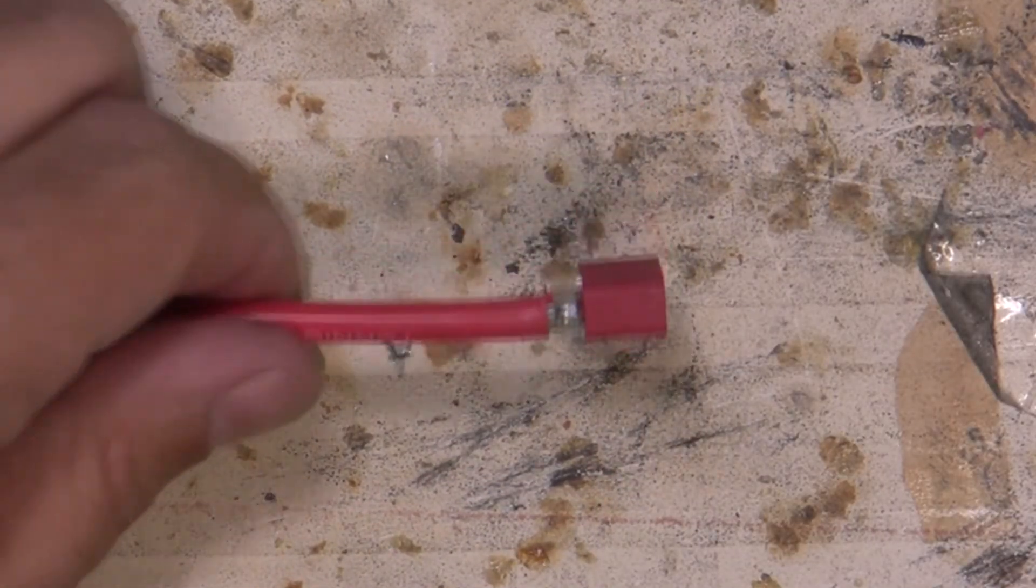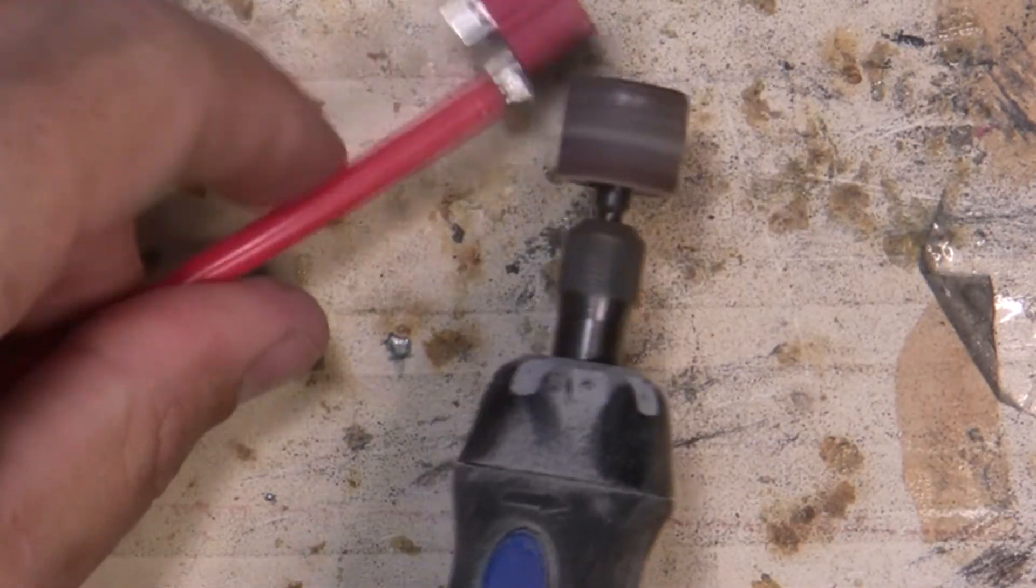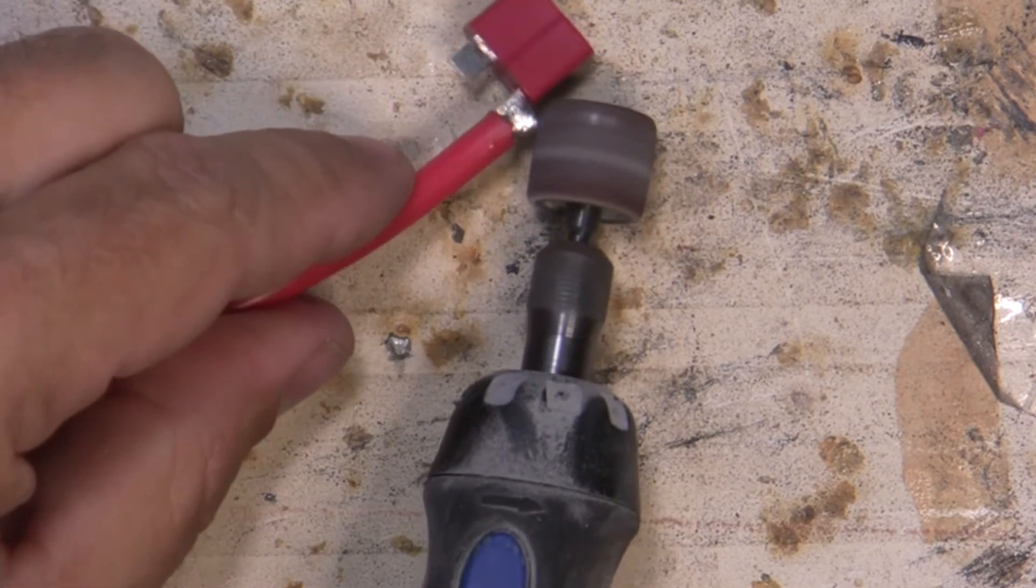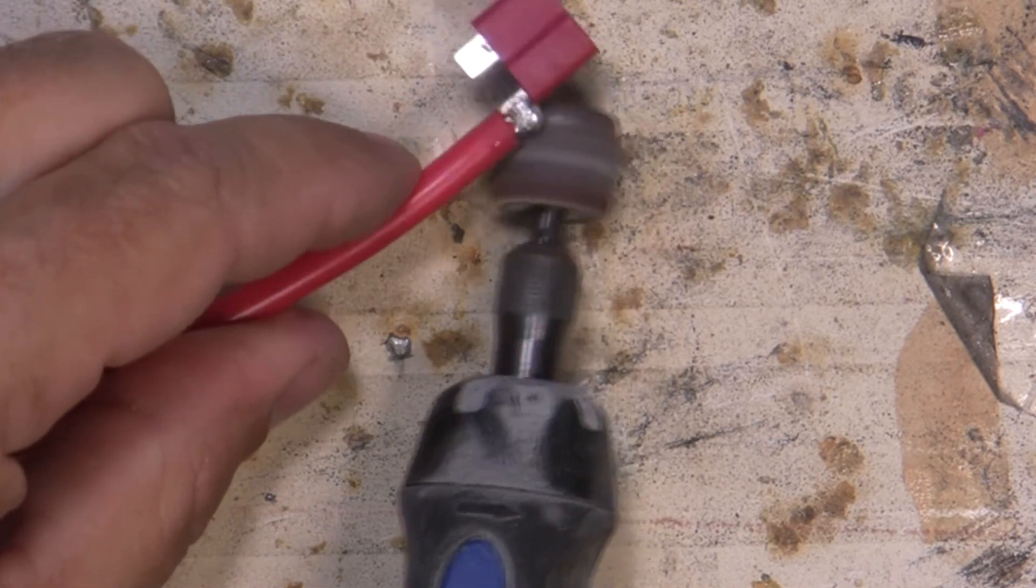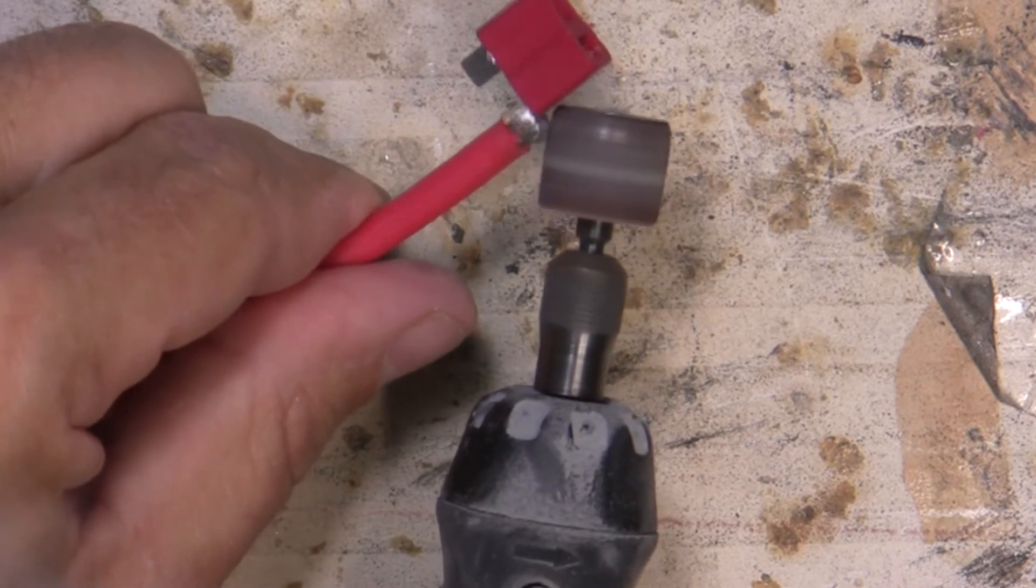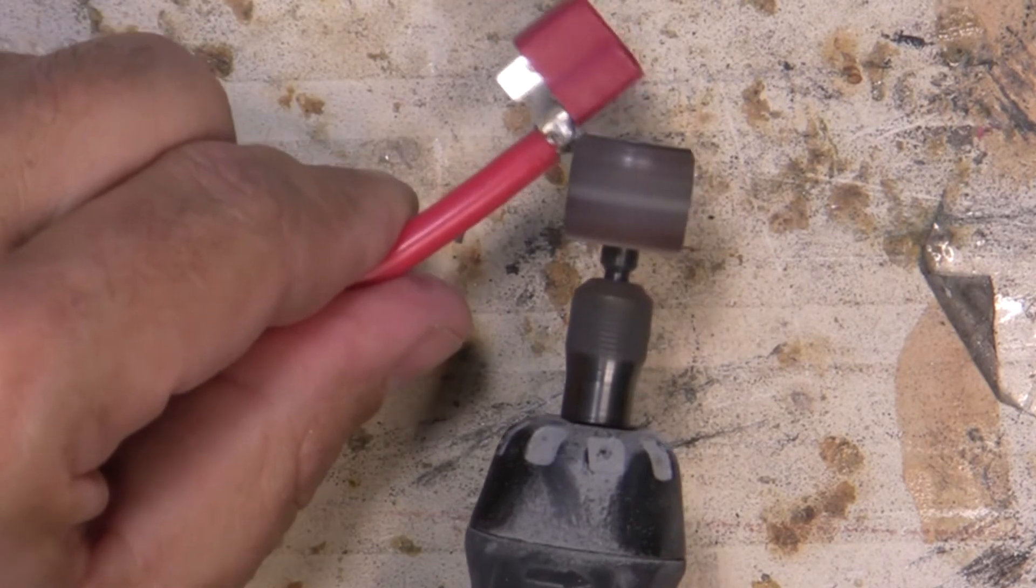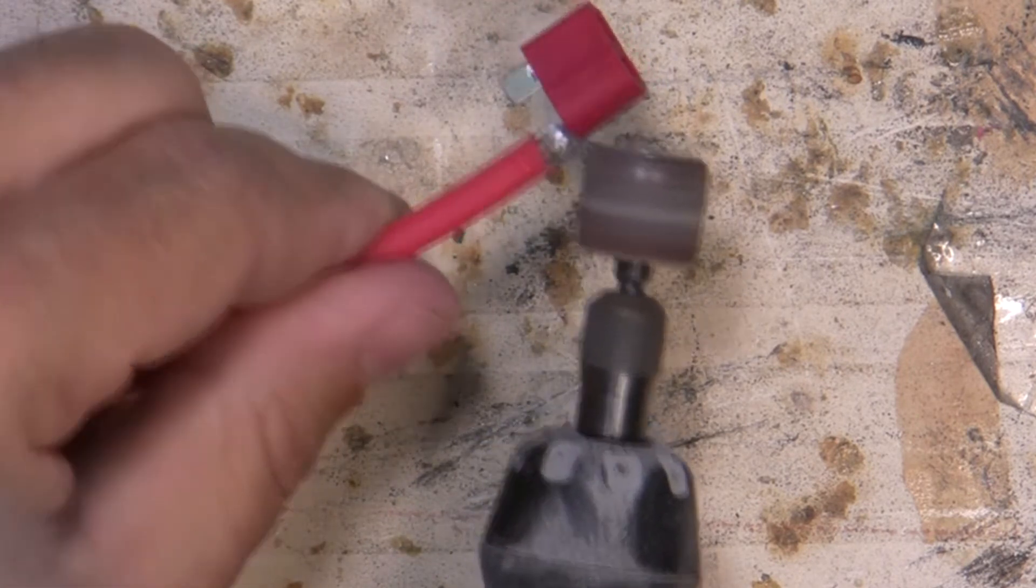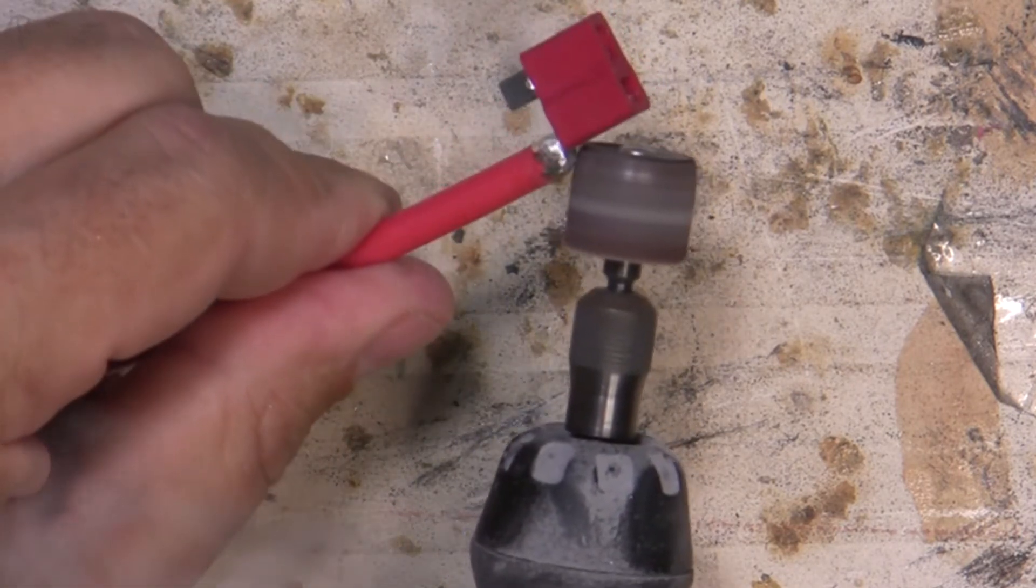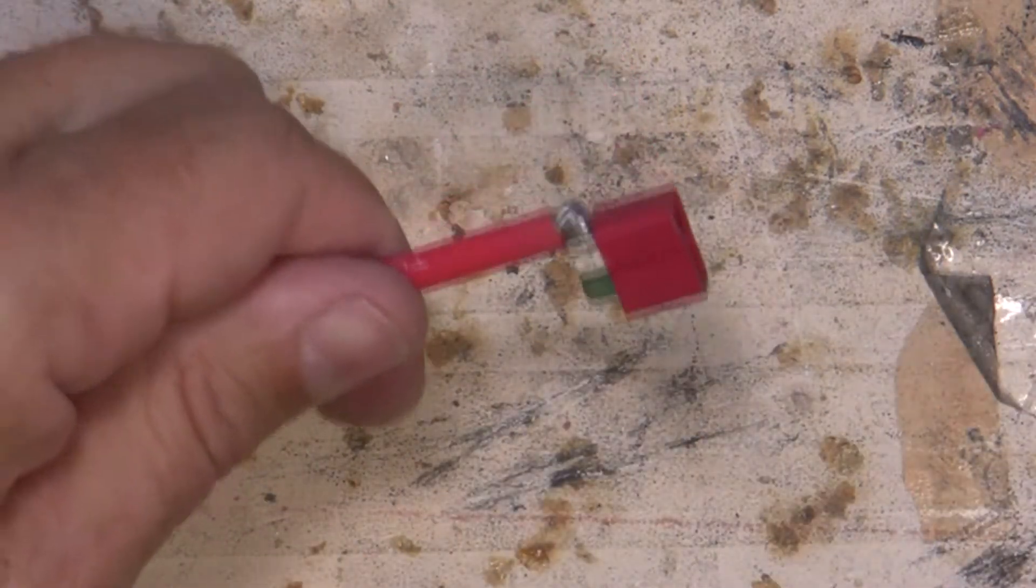I like to use a little Dremel and just trim that off a little bit, round it up. That way I won't have a sharp edge sticking out to penetrate the shrink tubing. Good.